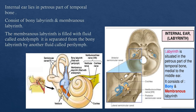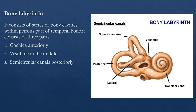The internal ear lies in the petrous part of the temporal bone. This is the middle cranial fossa, and this is the petrous part where the inner ear is located. The inner ear, also known as the labyrinth, consists of a bony labyrinth and, within it, a membranous labyrinth. The bony labyrinth is filled with a fluid known as perilymph, while the membranous labyrinth contains a fluid known as endolymph.